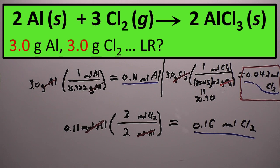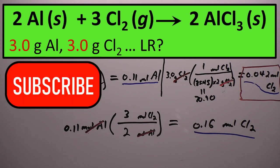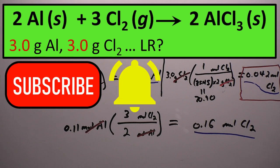Those are two examples of finding the limiting reactant. In the following video, we'll do two more examples that are a little bit more advanced. If you want to see those, subscribe to the channel and click the notification bell. If you enjoyed this video, I'd appreciate a thumbs up. Thank you very much for watching all the way to the end. Take care.